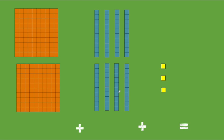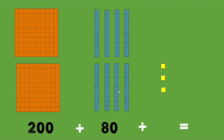How many blocks do you see here? How many hundreds? 2, so 200. How many tens? 8. How many ones? 3. So our total should be 283. Very good.